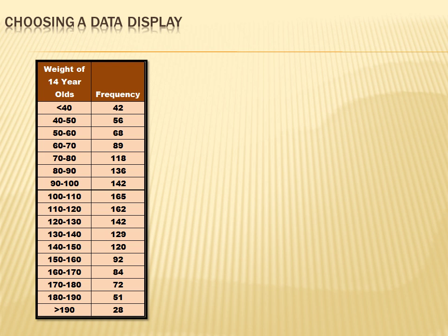You've got to figure out what's the best way to communicate the information you have. The best way means: number one, you communicate it so it's easy to understand; number two, you communicate it so it's unambiguous and not confusing; and number three, you communicate it so it doesn't distort the information or mislead the person looking at it.